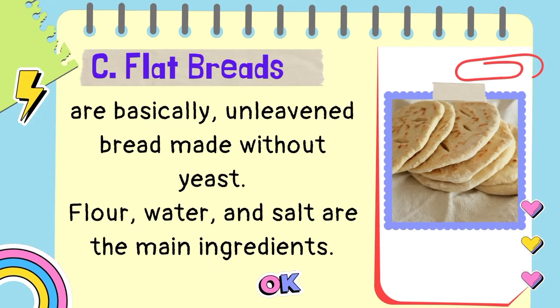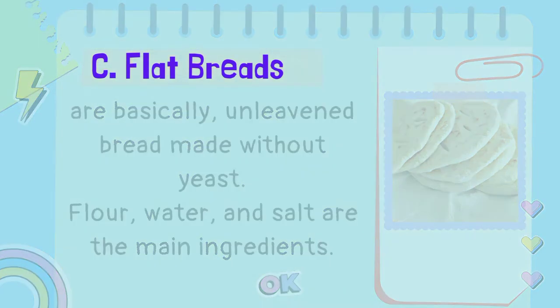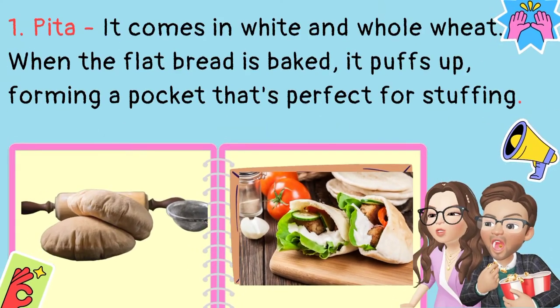C. Flat breads are basically unleavened bread made without yeast. Flour, water, and salt are the main ingredients. 1. Pita — it comes in white and whole wheat. When the flat bread is baked, it puffs up, forming a pocket that's perfect for stuffing.